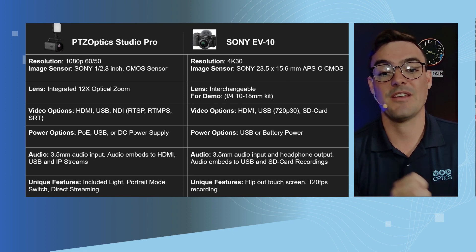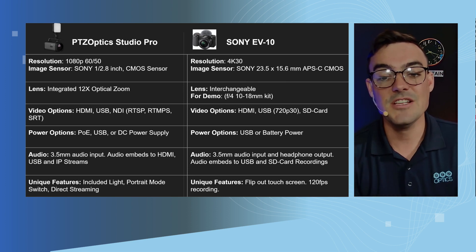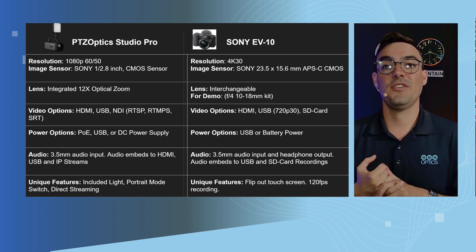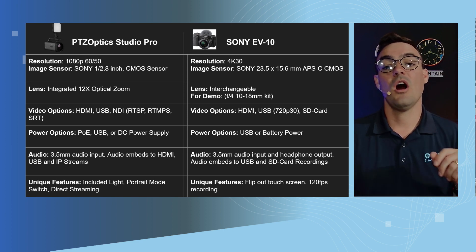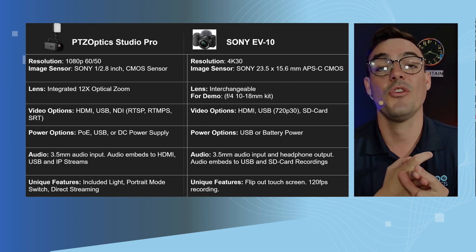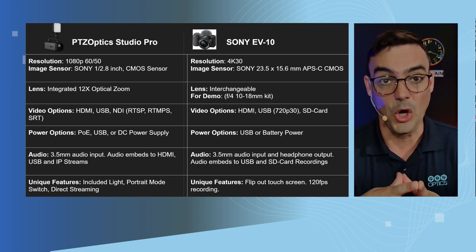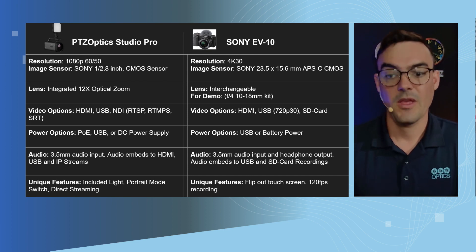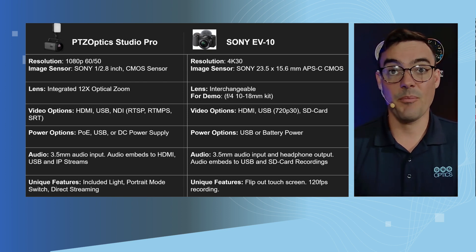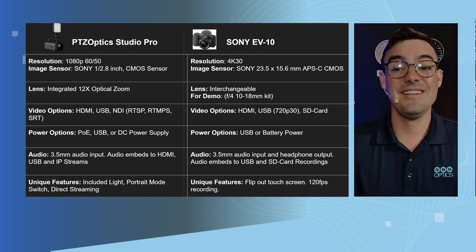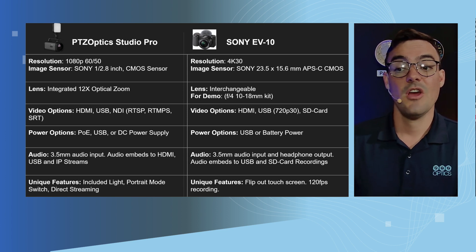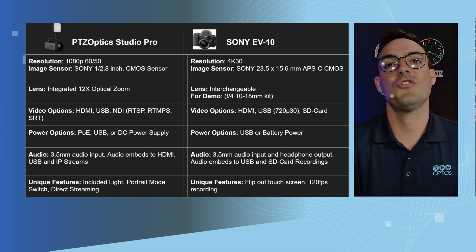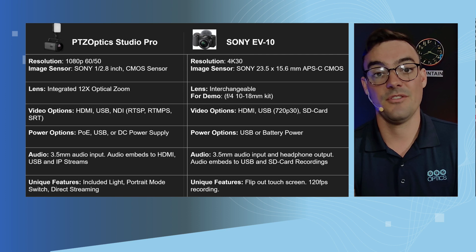From a video output perspective, this is a pretty significant difference. The Studio Pro has HDMI, USB-C, and NDI. It also has the ability to send out IP video on your network — locally for NDI, RTSP, direct streaming to YouTube and Facebook with RTMP, and it also supports SRT — the Secure Reliable Transport Protocol. On the Sony camera, we have an HDMI output and a USB output limited to 720p video at 30 frames a second, and you can record directly to an SD card — which is great for photographers and vloggers who need to go mobile with the built-in battery.